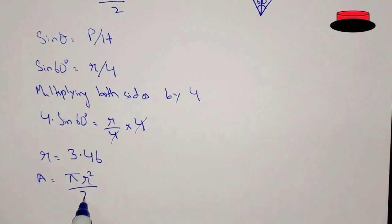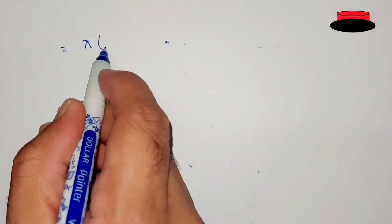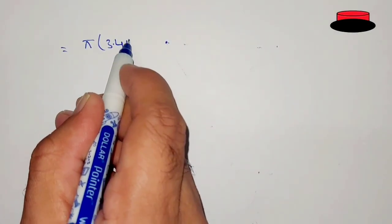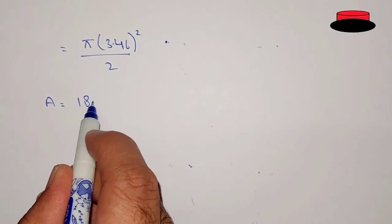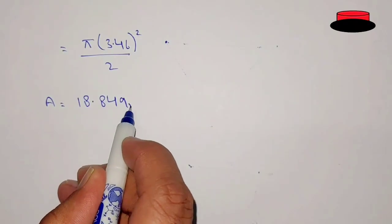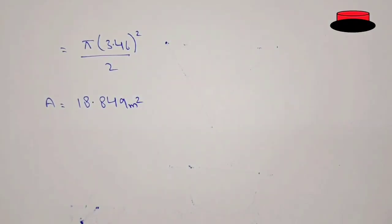Now, we can easily find out the area of the semicircle. Pi multiplied by 3.46 square divided by 2. The area of the semicircle is 18.849 meter square. Thanks for watching.